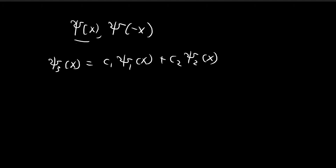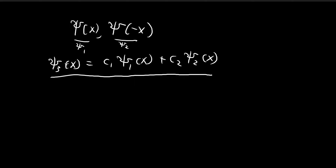In this case, our ξ₁ is ξ(x) and our ξ₂ is ξ(-x). Because ξ₃ is also a solution, we can construct another solution.